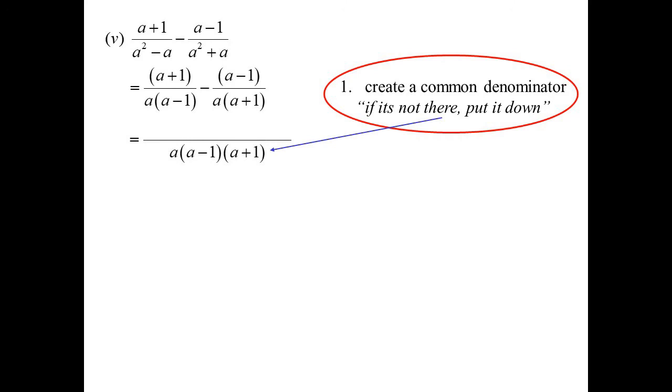So how do I do it? Well, what I do is draw in a vinculum, and then the bottom of the fraction. Well, how do I work it there? Basically, I say to myself, if it's not there, put it down. So I just start reading across. a. Well, it's not there, so I put it down. There's my a. a minus 1. It's not there, so I'll put it down. a minus 1.